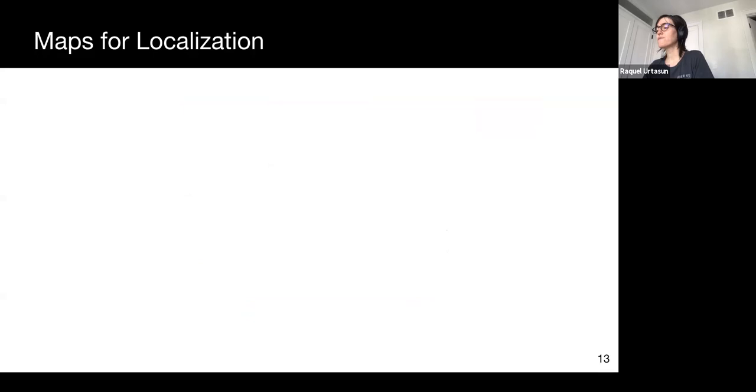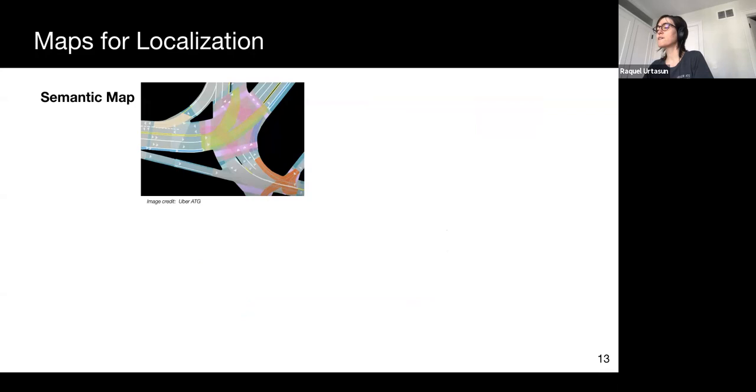There is a wide range of representations which can be used for localization, in terms of localization maps. HD maps can be built and annotated with information such as lane boundaries, lane types, signs, etc. These kinds of maps can also be used for localization.